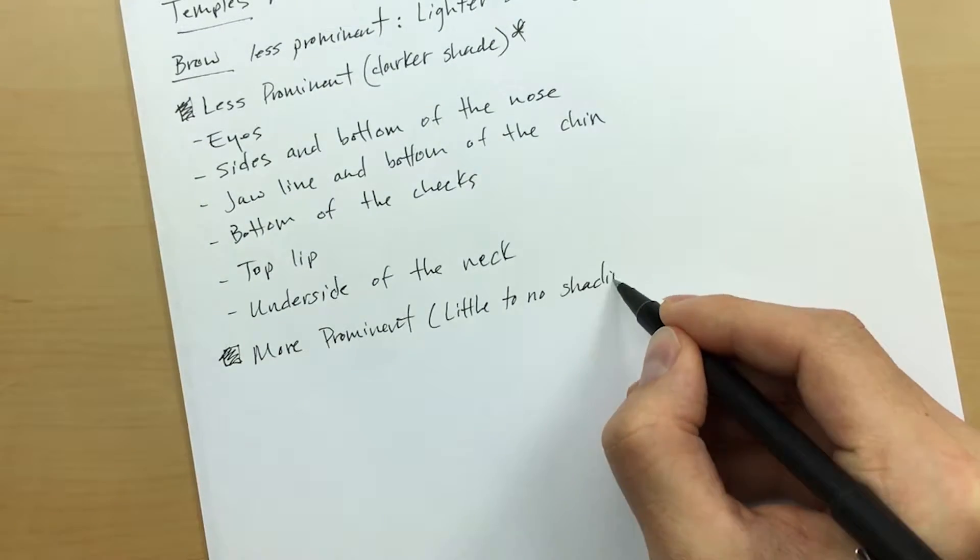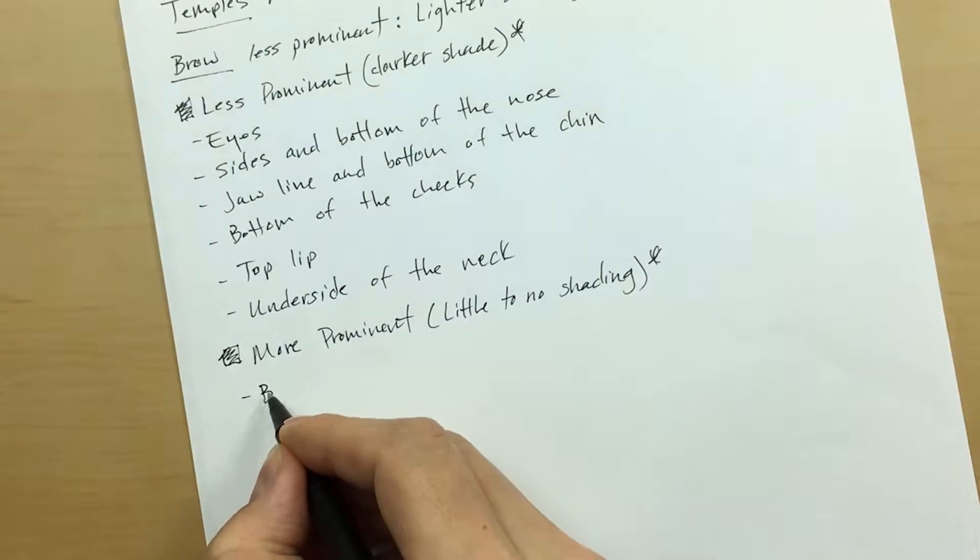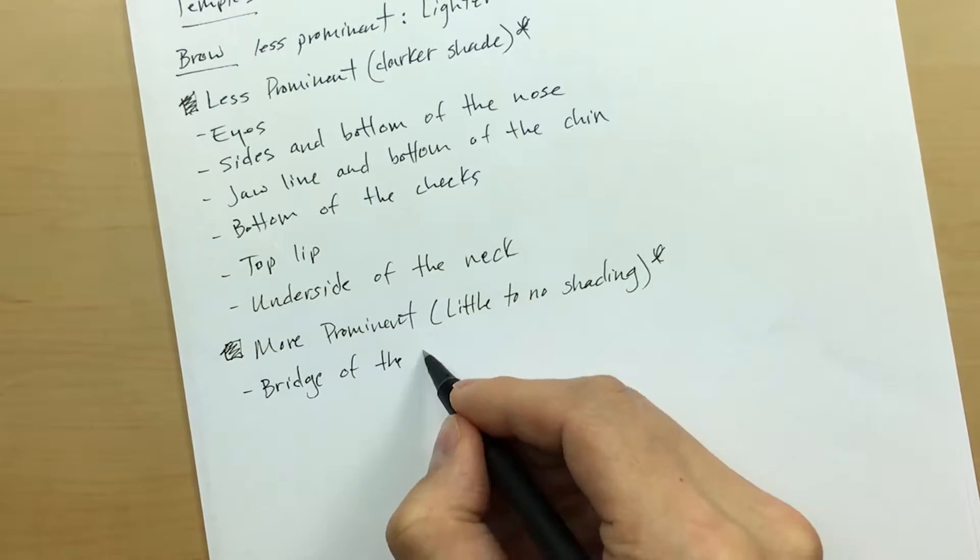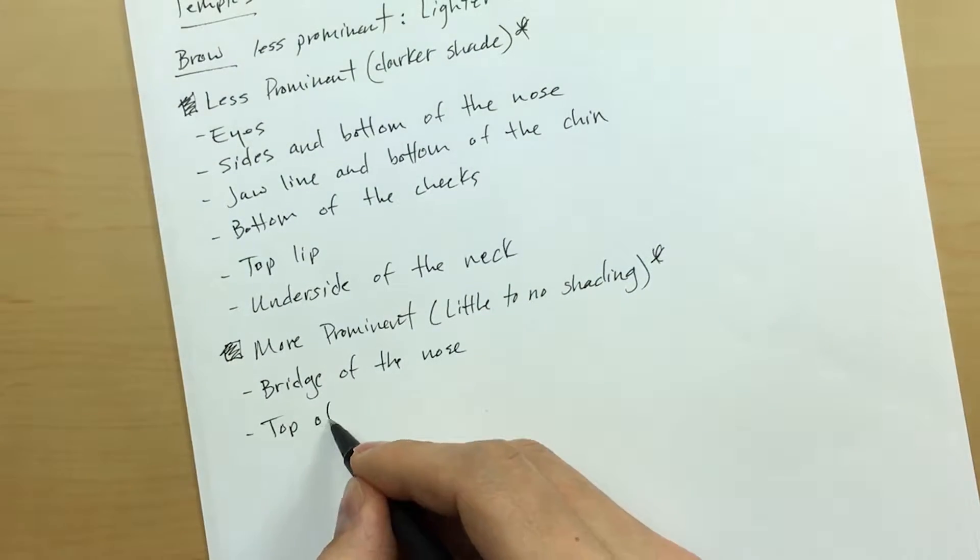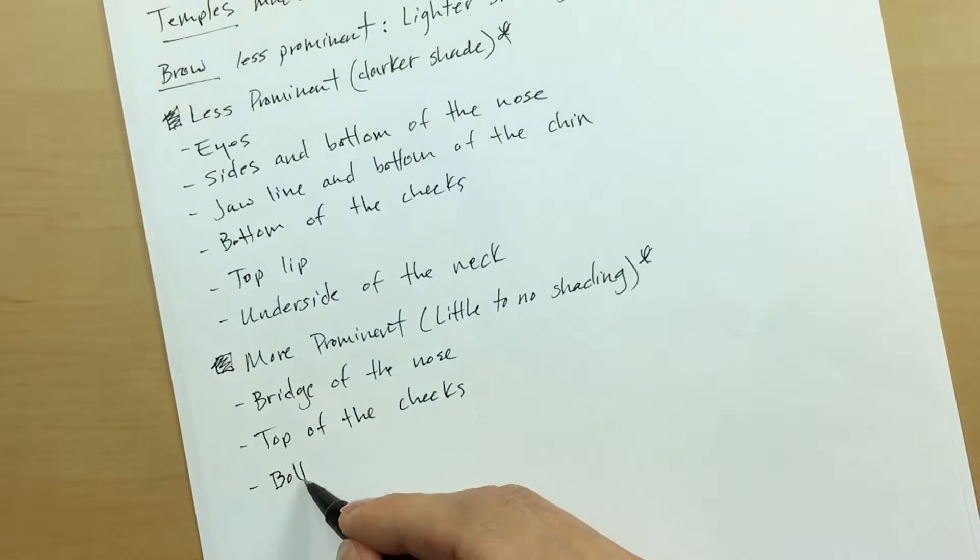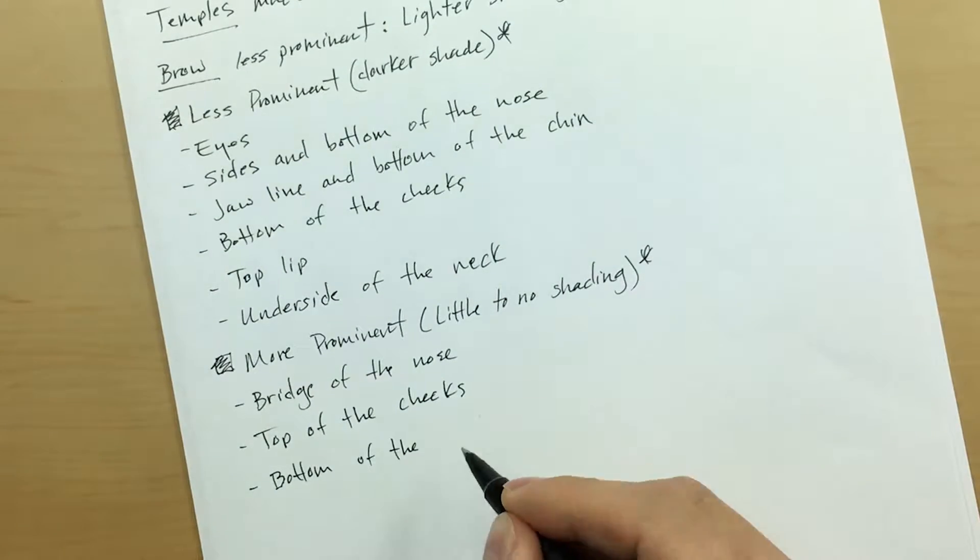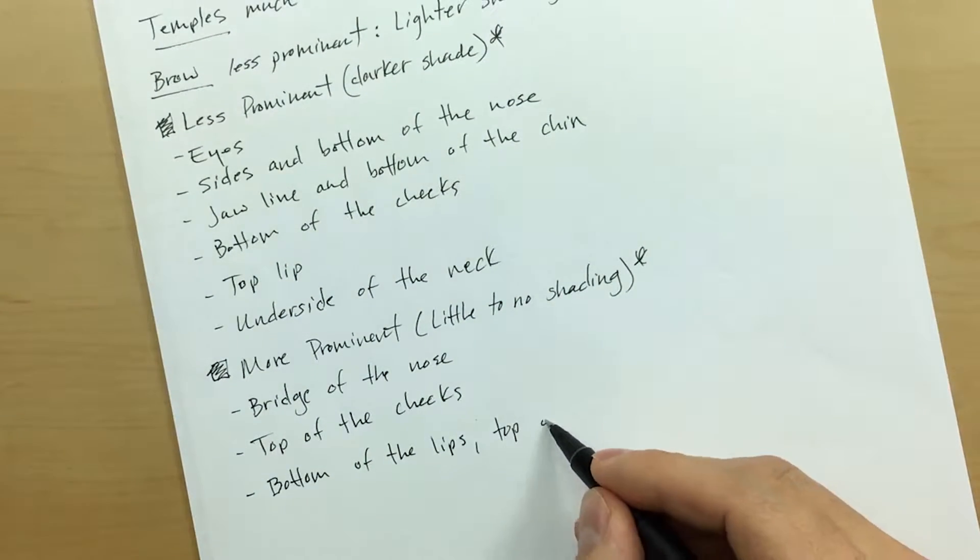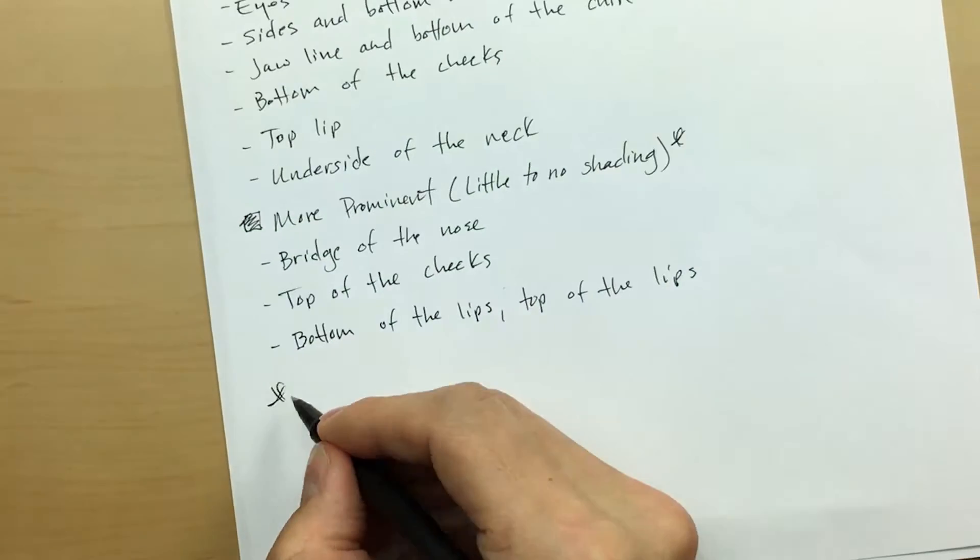We have more prominent features that require little to no shading. These features include the bridge of the nose, the top of the cheeks, as well as the bottom of the lips and the top of the lips.